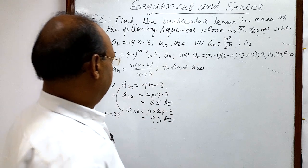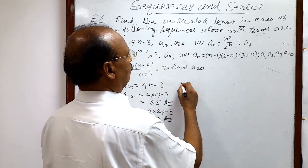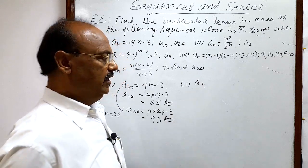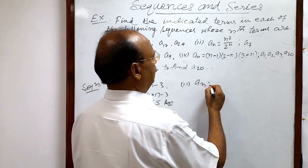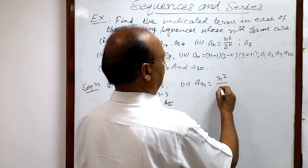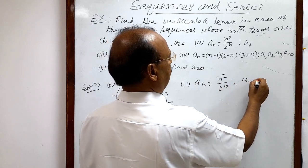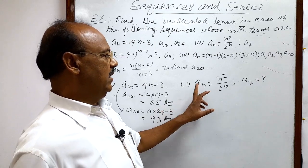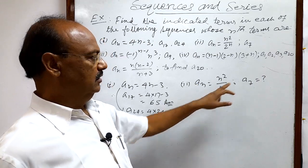Now let us see this second question. Here second question nth term in general term is given here. An is equal to n square by 2 to the power n. We have to find out a7, 7 means 7th term. That we will get by replacing here n with 7.